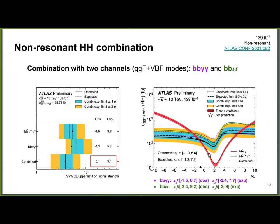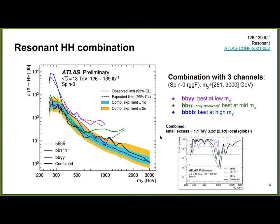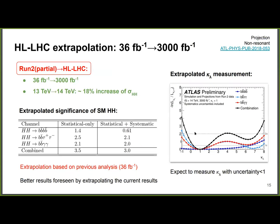After establishing results in various channels, a data combination is performed. For the non-resonant case, the combination achieves an SM HH cross-section limit of 3.1 times the SM prediction. The combination for κλ shows complementary sensitivity from bbγγ and bb tau tau across different κλ ranges. For the resonant spin-0 hypothesis, three channels (bbγγ, bb tau tau, 4b) are combined up to 3 TeV, gathering the advantages of each channel across the mX range. An excess around 1.1 TeV is visible in the combination, consistent with individual channels.